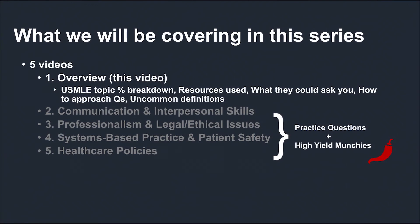This is an overview video to a five-part series where we will be covering the four social science competencies listed by the USMLE: communication and interpersonal skills, professionalism and legal/ethical issues, systems-based practice and patient safety, and healthcare policies. I want us to focus on active learning, so the bulk of these videos are practice questions. I will end each video with a section called high-yield munchies, which will summarize all the questions we went through so you can review right before test day and feel prepared.